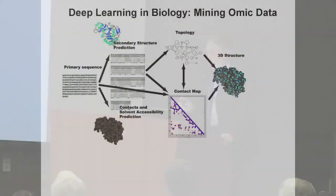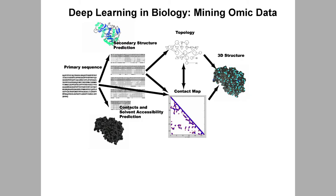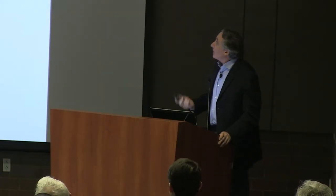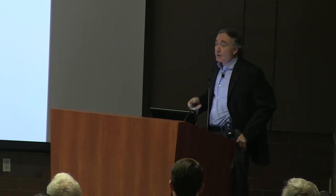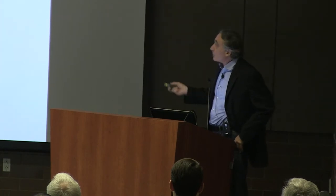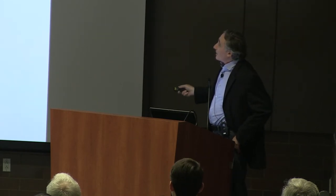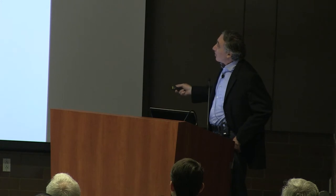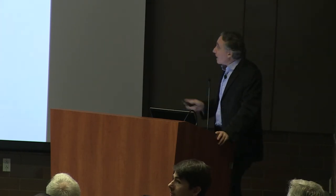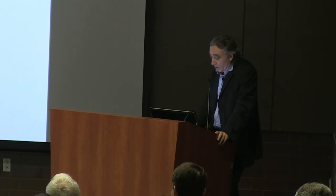The third example is in biology — mining omic data, specifically structural proteomic data from the PDB database, for the prediction of protein structures, a very fundamental unsolved problem. The approach starts from the protein sequence, predicts features including the secondary structure — the location of alpha helices and strands along the protein backbone — and then predicts the contact map: a symmetric, sparse matrix where a 1 at position i and j indicates the corresponding amino acids are close together in the three-dimensional structure.